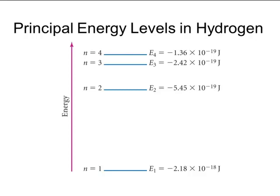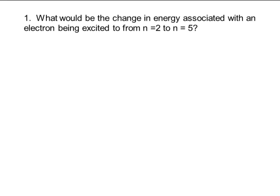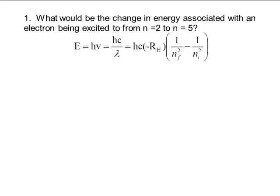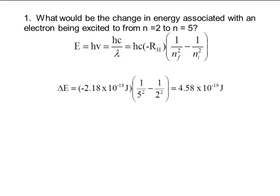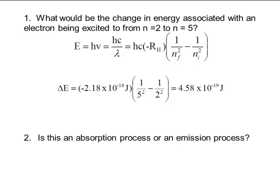Let's look at a calculation: an electron in a hydrogen atom goes from N equals 2 to N equals 5. I want to calculate the energy associated with this transition. Plugging into the equation — going from N equals 2 to N equals 5, so my final is 5 and my initial is 2 — gives a value of 4.58 × 10⁻¹⁹ joules. It's a positive value, which tells me I have to put energy in. So going from N equals 2 to N equals 5 is an absorption process, and the sign of delta E tells us whether we're absorbing or emitting energy.